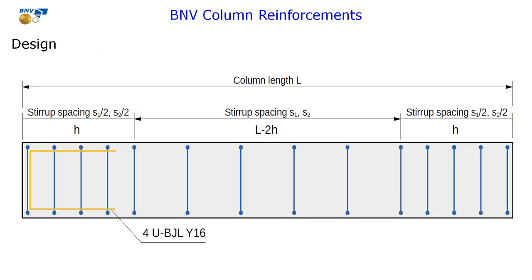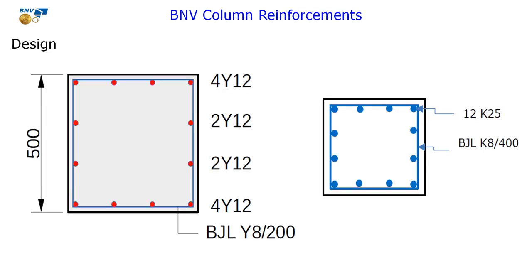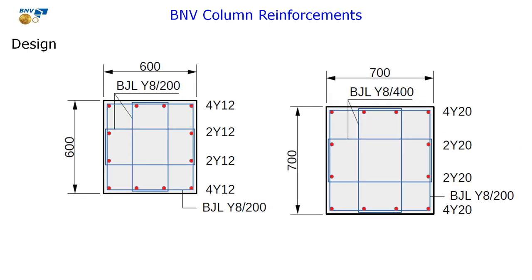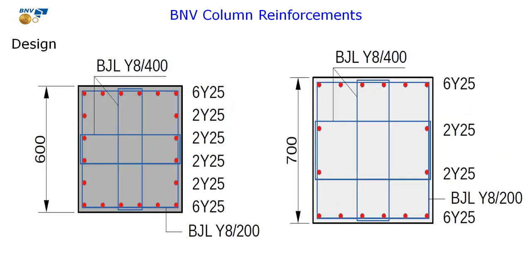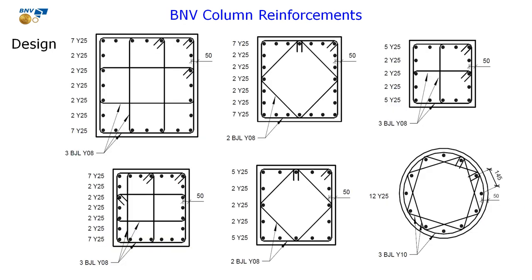This component supports you to make full reinforcement for typical columns. You can easily change desired rebars for columns with many types of design. The stirrup can be flexible to change, sharp, and tight.